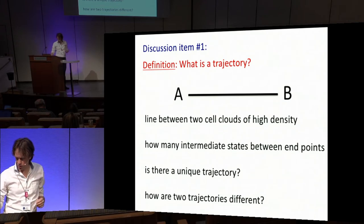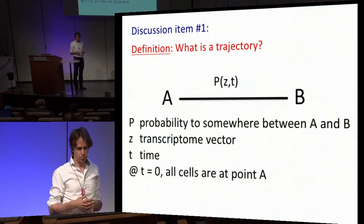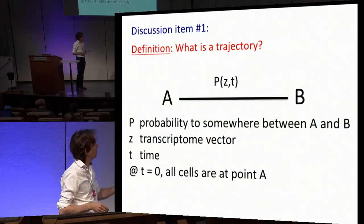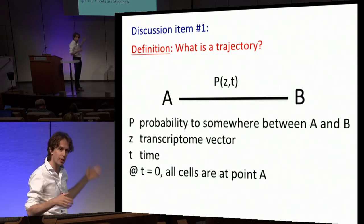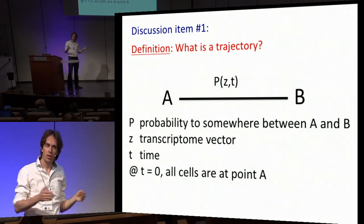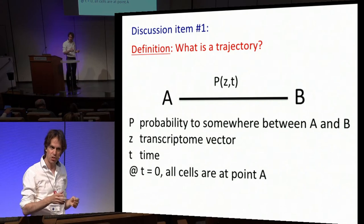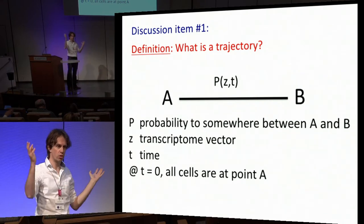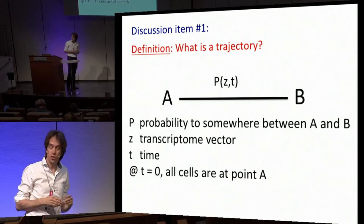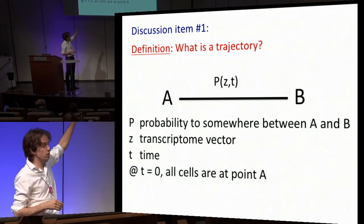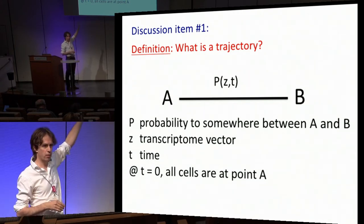After some discussion, what we came up with is that this is probably a probability distribution. In one dimension, it's a probability that depends on Z and T — T being time, Z being the transcriptome. I'm just showing you a one-dimensional projection.